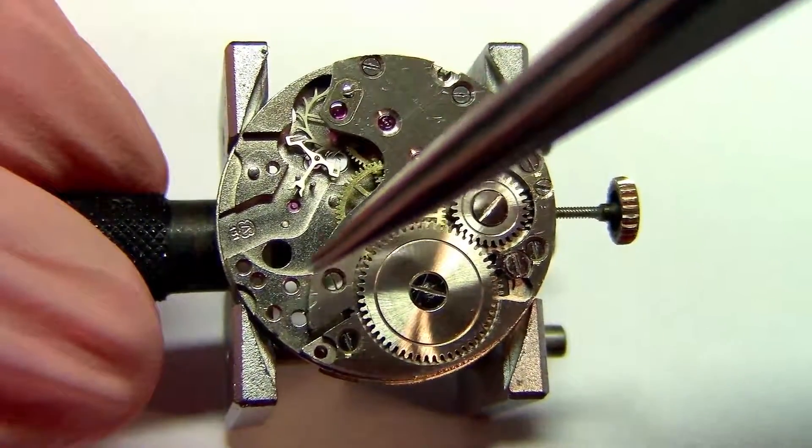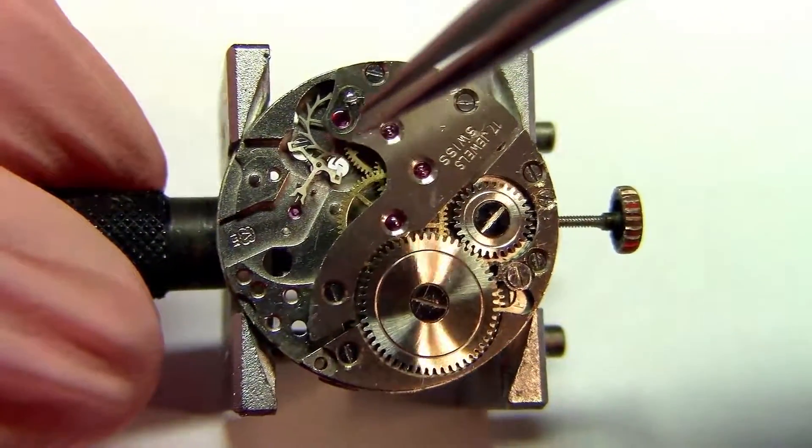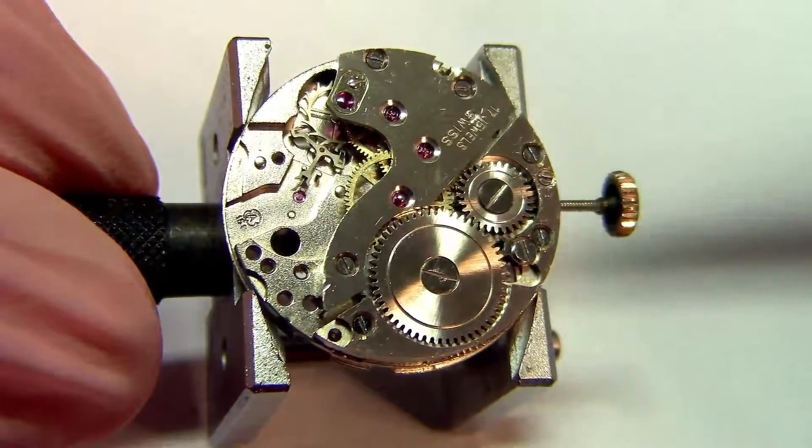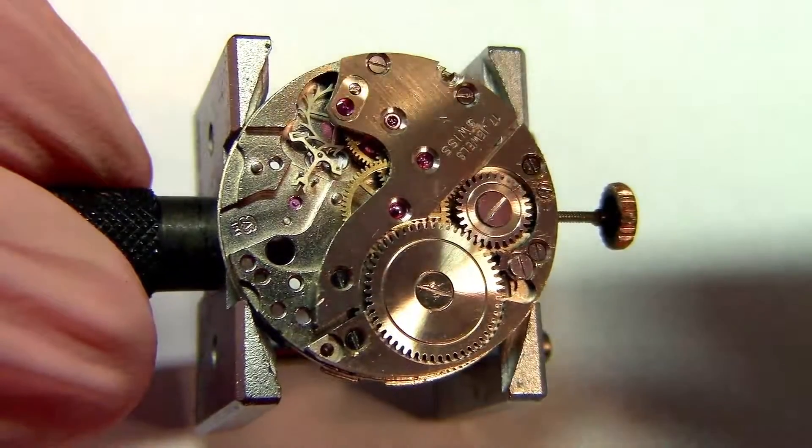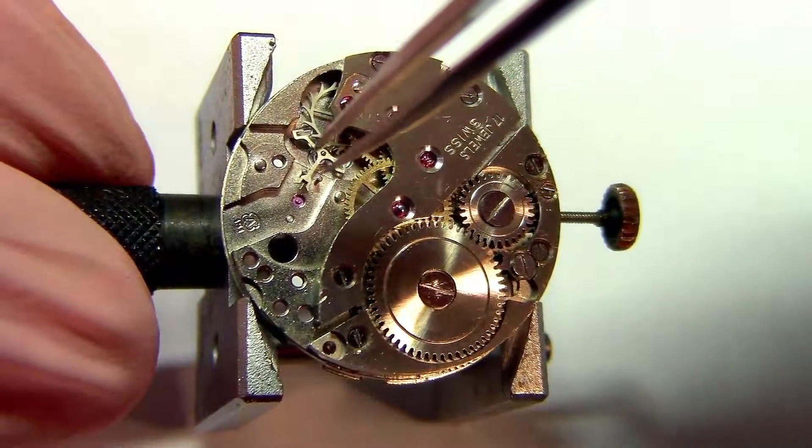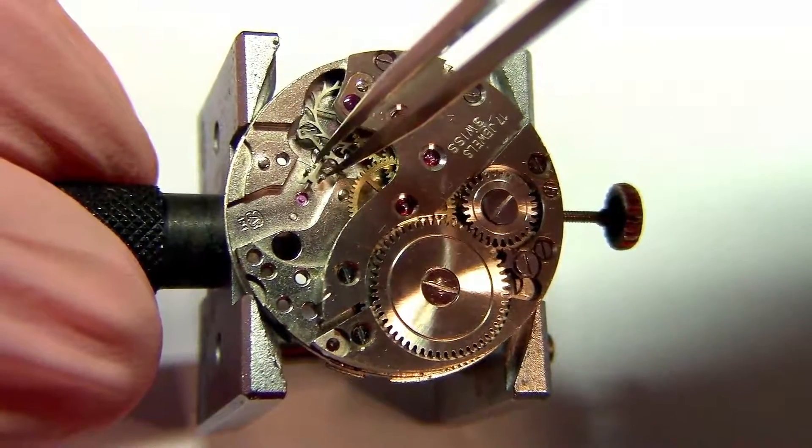Here I have the movement without the balance wheel and its bridge. So all that is blocking the energy from the mainspring is just the pallet fork in place. And I will remove the pallet fork and you will see what's going to happen.